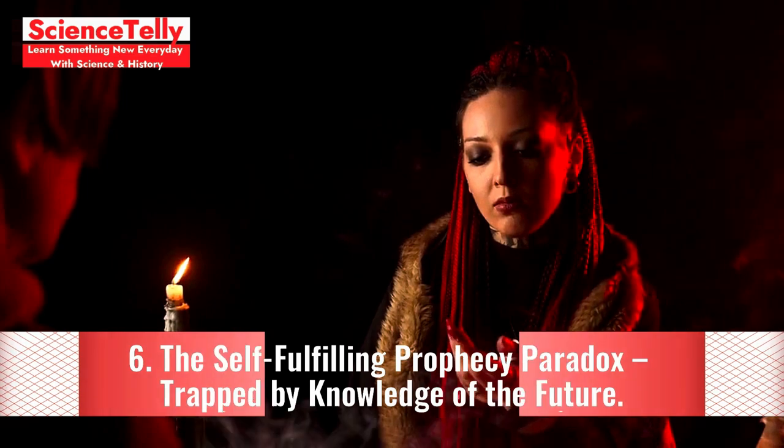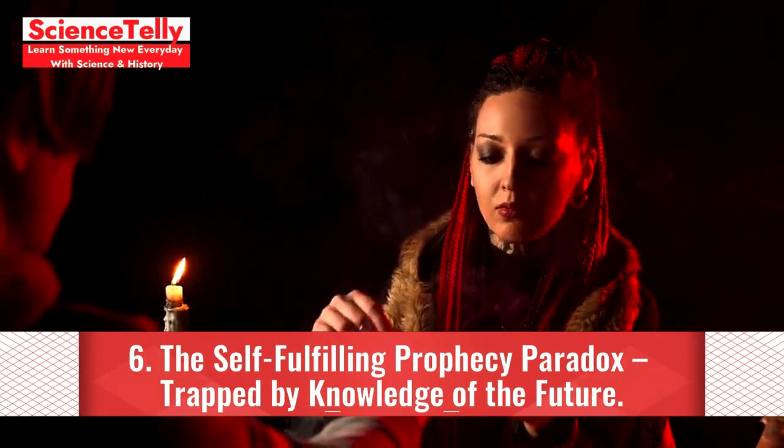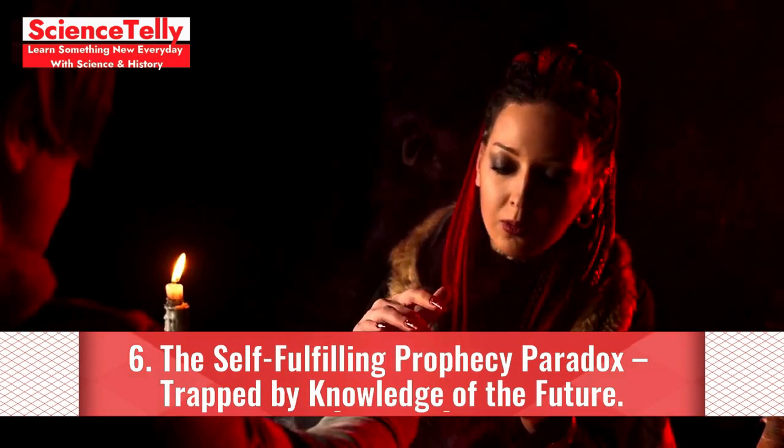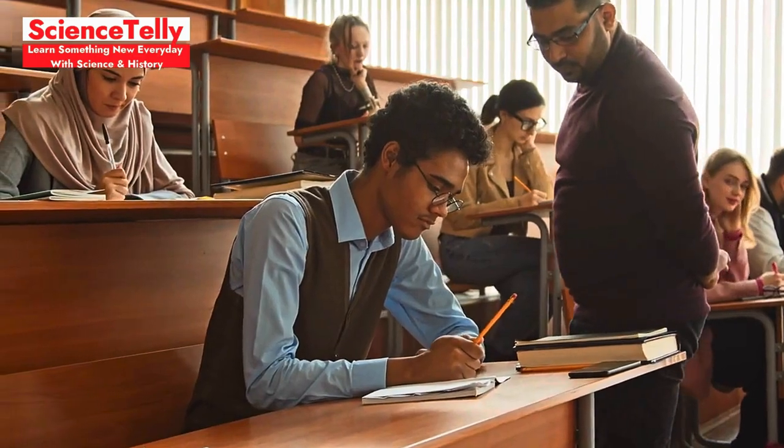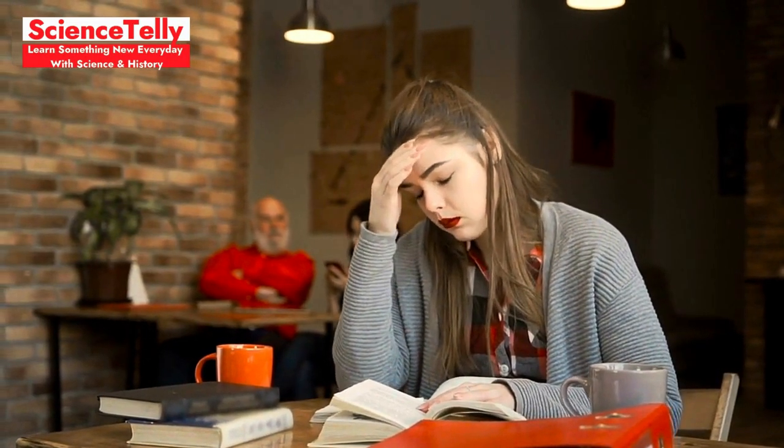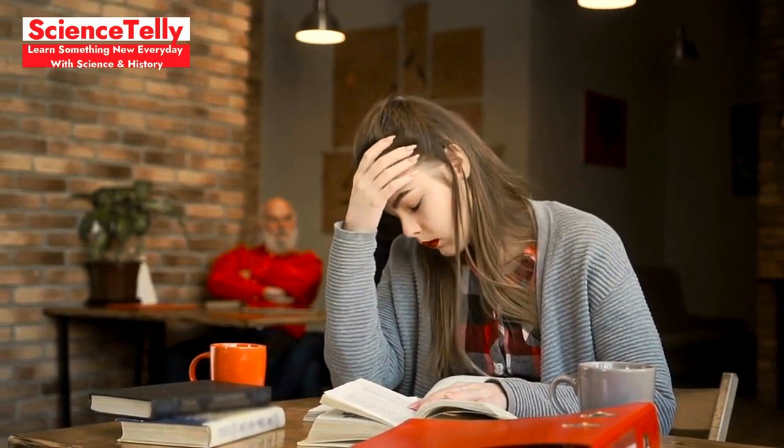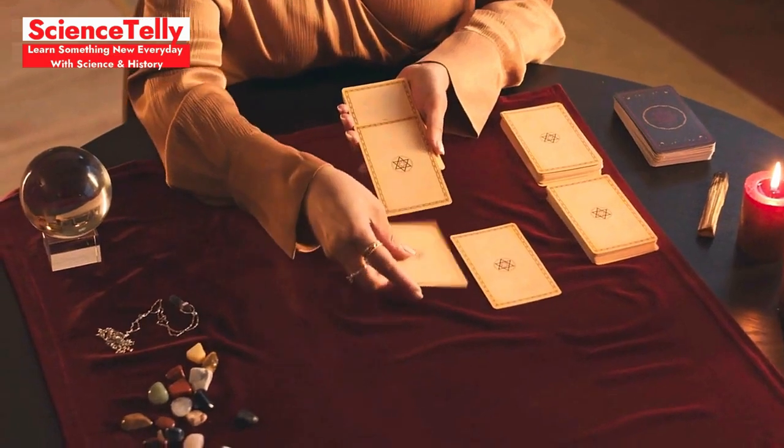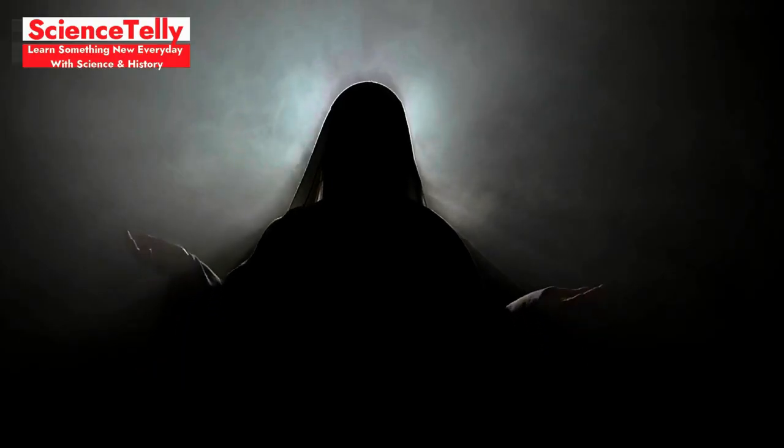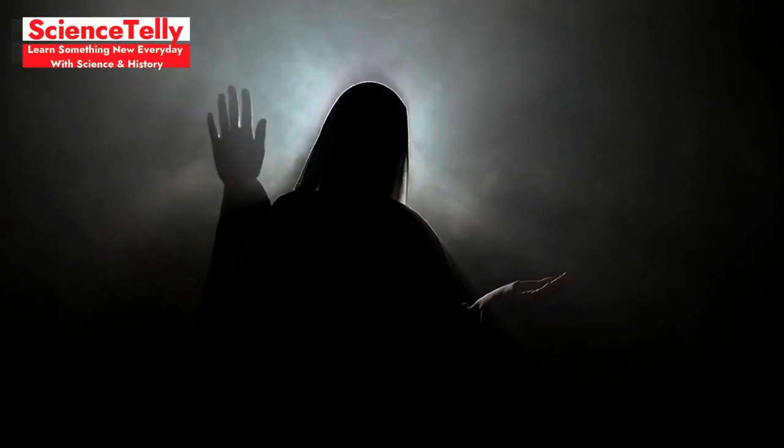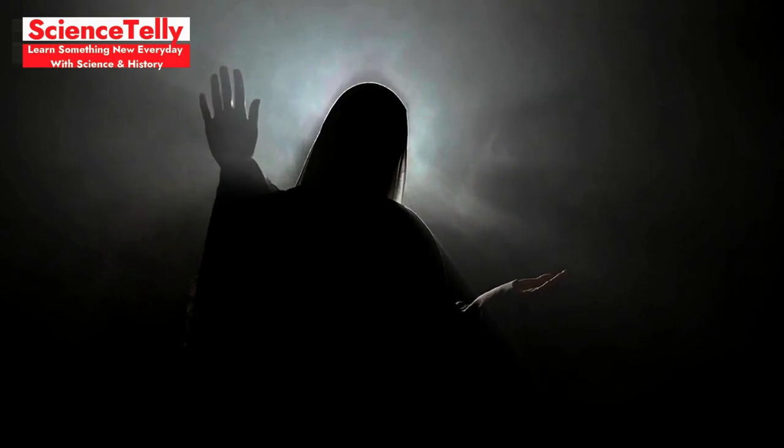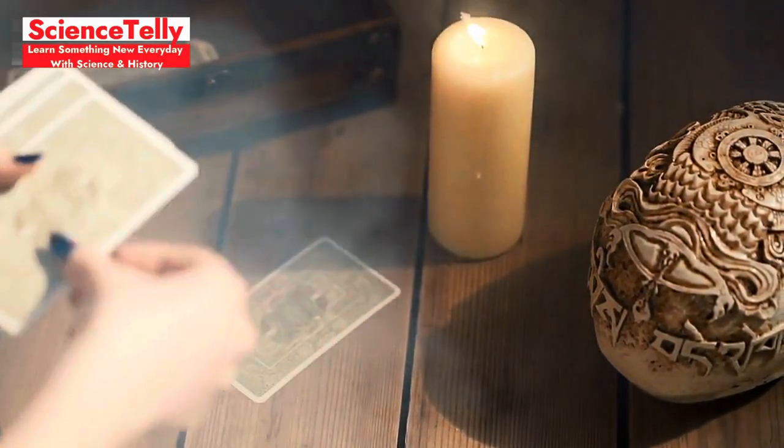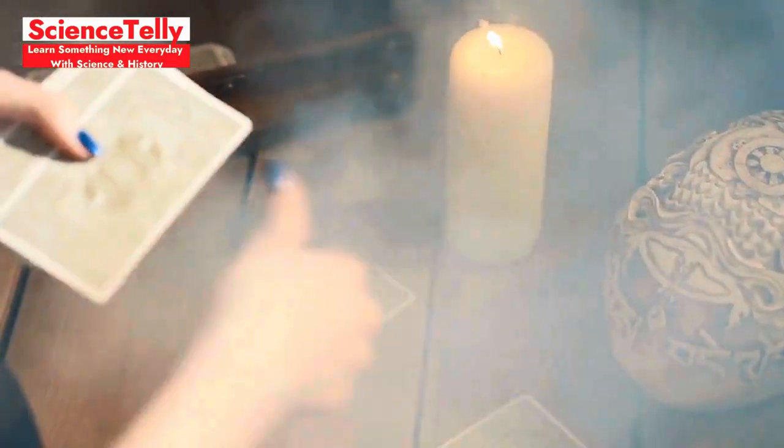Number six, the self-fulfilling prophecy paradox, trapped by knowledge of the future. Imagine being told you'll fail a big exam. Determined to avoid it, you overthink and stress so much that you end up performing poorly, making the prediction come true. This paradox shows how information about the future can trap us. In trying to prevent a future event, you might set yourself on the exact path that leads to it. Knowing too much about your destiny can sometimes make it impossible to avoid.